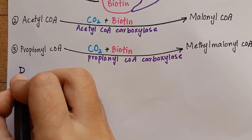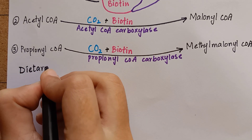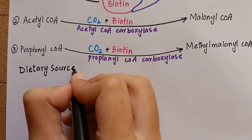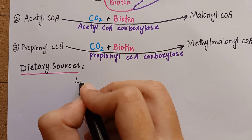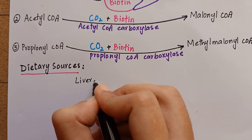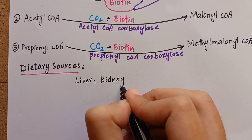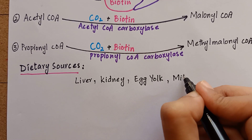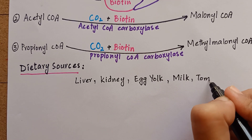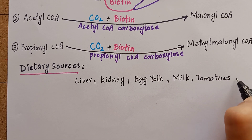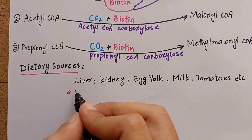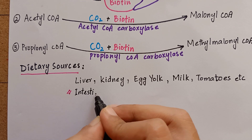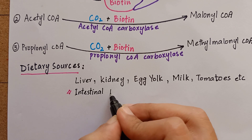Biotin is widely distributed in both plants and animal foods. The rich sources of biotin are liver, kidney, egg yolk, milk, tomatoes, etc. Also, a large percentage of biotin in humans is supplied by intestinal bacteria.